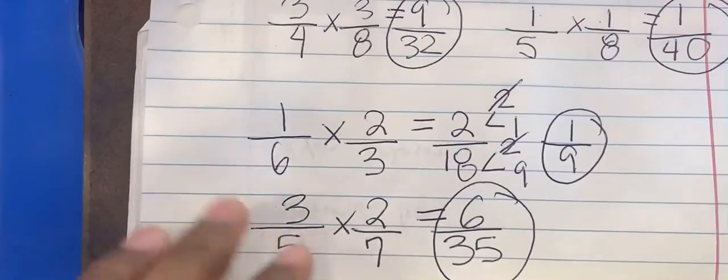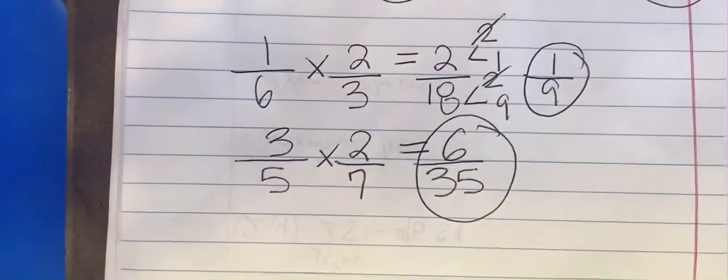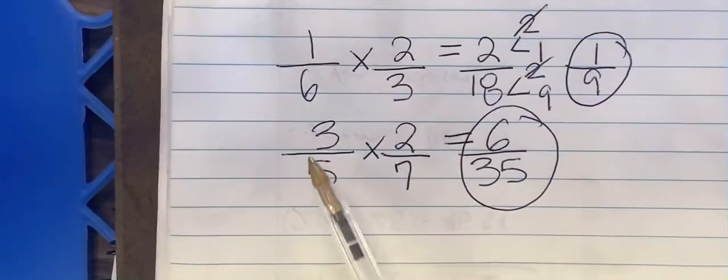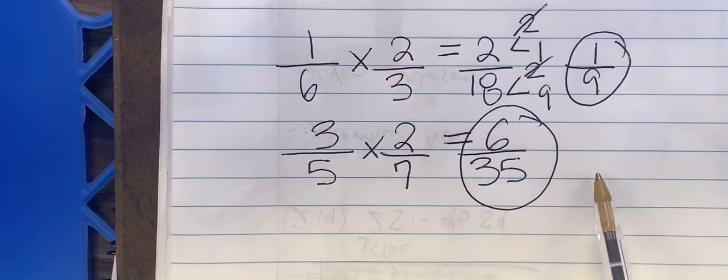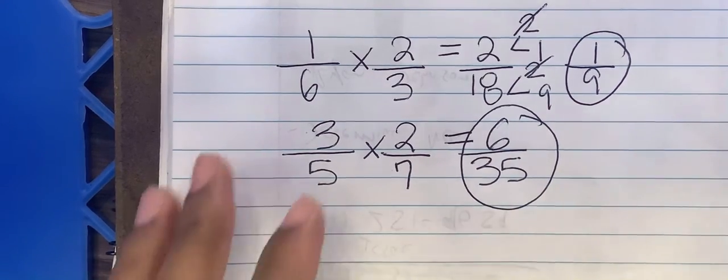Oh, sorry about that. That was a little bit too low. So what I did was 3 multiplied by 2, it got 6. 5 multiplied by 7, I got 35. Let's do another problem here.